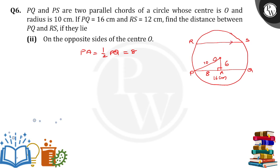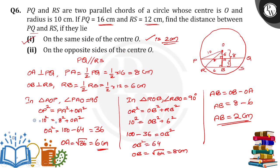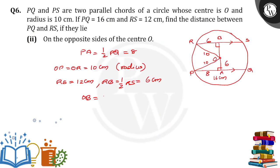Since these two chords are parallel, OA is perpendicular to PQ and OB is perpendicular to RS. OR is equal to 10 centimeters since it's a radius. RS is given as 12 centimeters, so RB = half of RS = 6 centimeters. From the previous calculation, OB is equal to 8 centimeters.